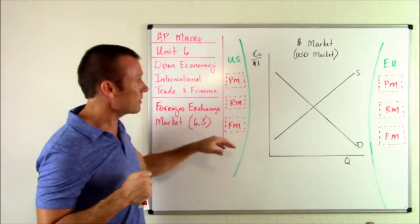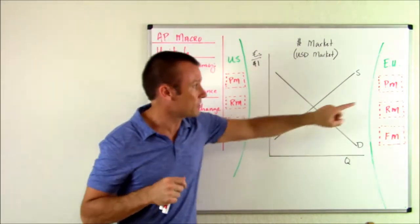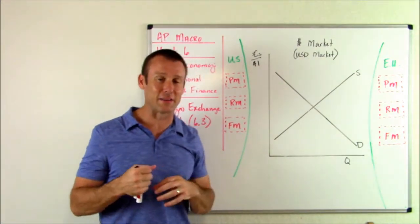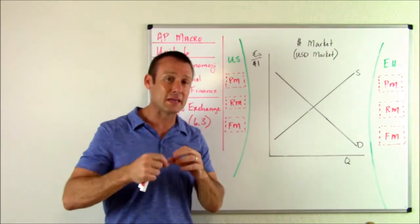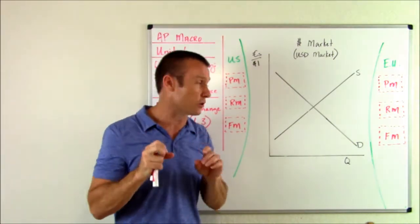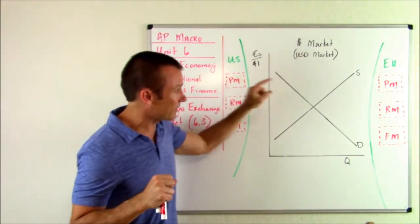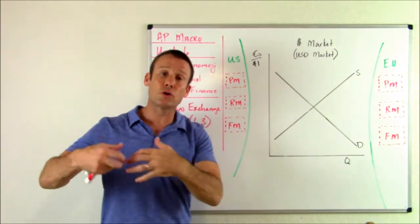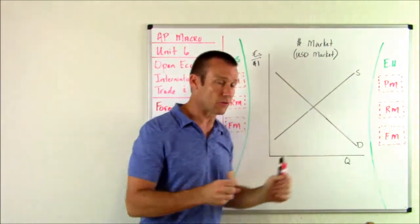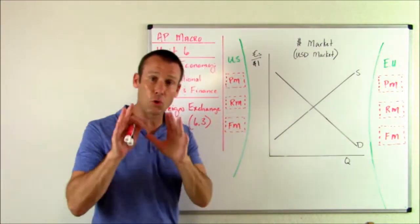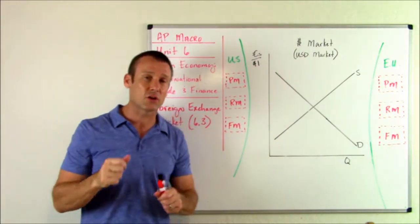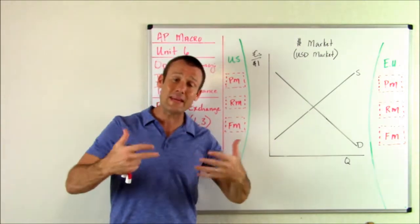We're also thinking about Americans who might want to go to the European Union and participate in their product market, resource market, or financial market. For most of those countries, you're going to need the euro. So this market shows Americans supplying their dollars in order to get euros so they can go interact over there. It's a means to an end — you go here to go to one of those three markets.